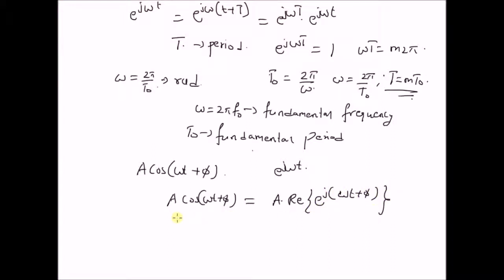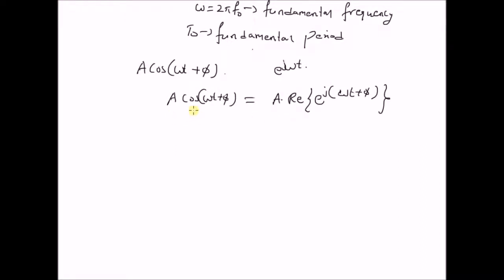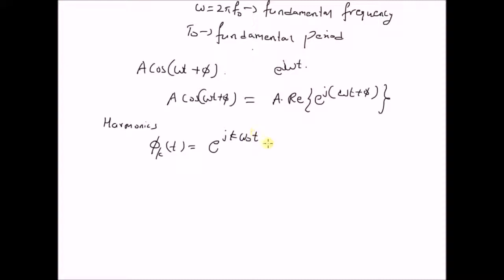So the cosine signal is basically the real component of the complex exponential e^(jωt). This relation is derived from Euler's formula. Another related concept is the signal φ_k(t) equals e^(jk·ω₀·t), where k is an integer.